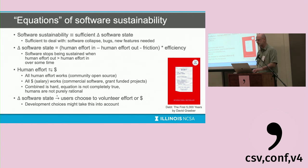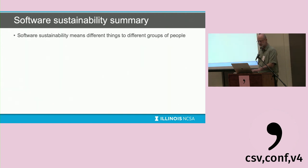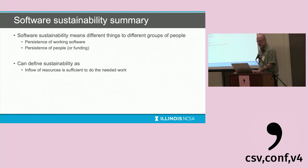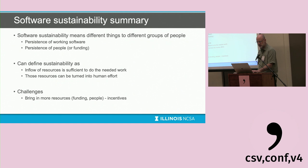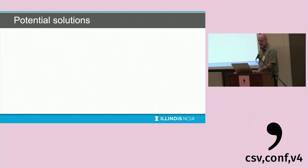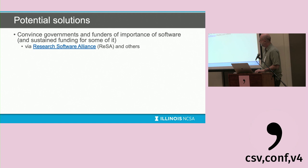To wrap up: software sustainability means different things to different groups — persistence of working software, persistence of people, or persistence of funding. We can define sustainability as: the inflow of resources is sufficient to do the needed work, and those resources can be converted to human effort. The challenges are how to bring in more resources — funding or people, which leads to questions about incentives — and how to reduce the needed work, which leads to questions about best practices.